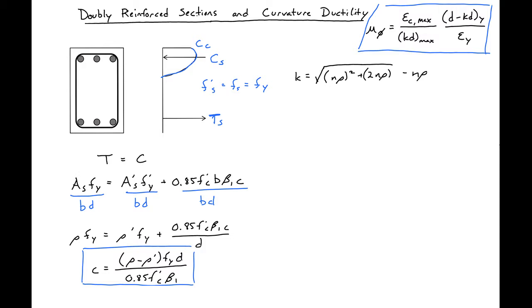For simplicity, we're going to assume that our expression that we found for K for yield doesn't change from before. And this will be true within about 10 to 15%.